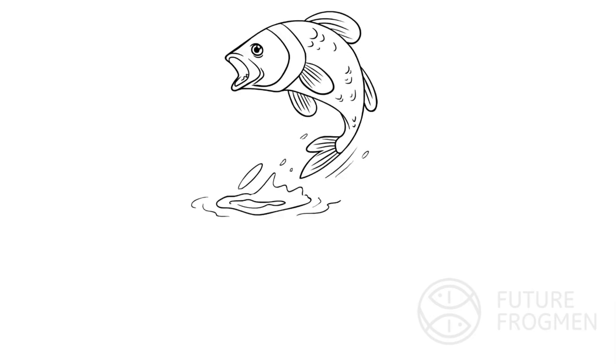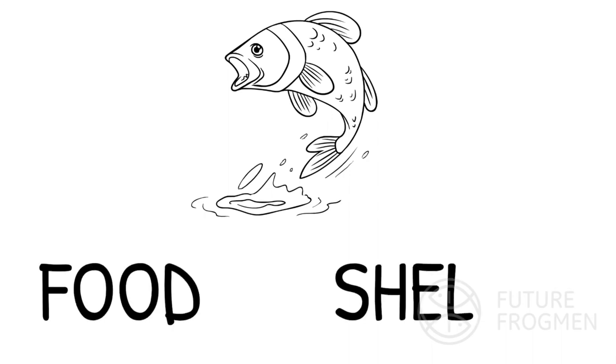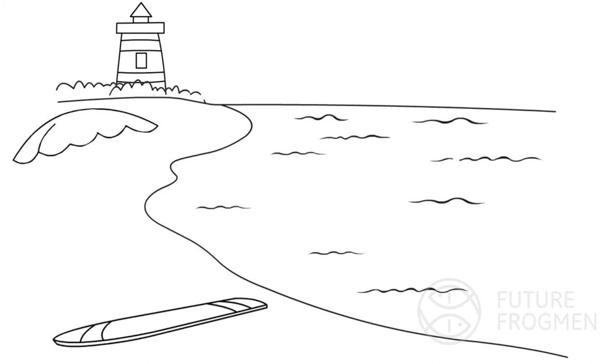Shifts in coral community structure can negatively impact many other species, including fish, that depend on these reefs for food and shelter.